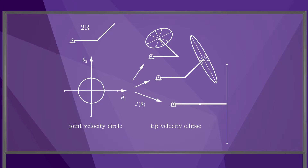As the second joint angle approaches zero, the ellipse squashes in the direction it is difficult to move and stretches in the orthogonal direction until, at the singularity, the ellipse collapses to a line segment. As we will see shortly, we can assign a measure of just how close the robot is to being singular, according to how close the ellipse is to collapsing.